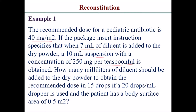How many milliliters of diluent should be added to the dry powder to obtain the recommended dose in 15 drops? The recommended dose has to be given in 15 drops, and you have a dropper that gives 20 drops per milliliter, and the patient has a body surface area of 0.5 meters squared.